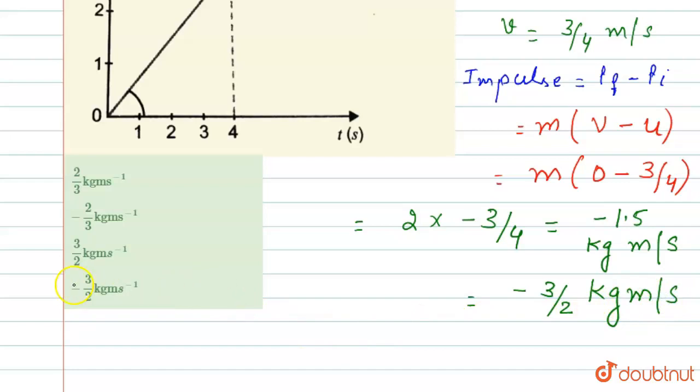So according to option, our fourth option is the correct option, minus 3 by 2 kg meter per second. I hope you understand the explanation.